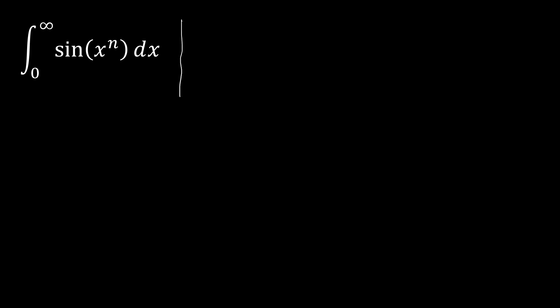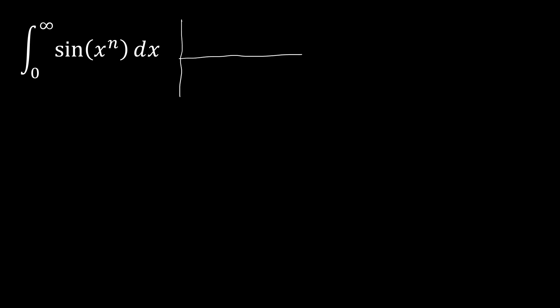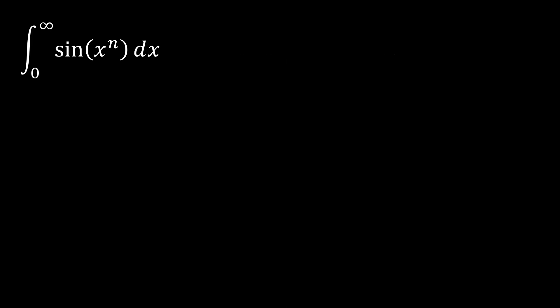The first integral we're going to take on is the integral from zero to infinity of sin(x^n). First, let's discuss convergence. For n equals one this diverges because it oscillates infinitely. For n less than one, as x gets bigger the sine curve slows down and takes longer to oscillate, so we're adding up bigger and bigger amounts and it diverges. For n greater than one, the sine curve speeds up, oscillating faster and faster, eventually not adding any area — so this converges. We require n greater than one.